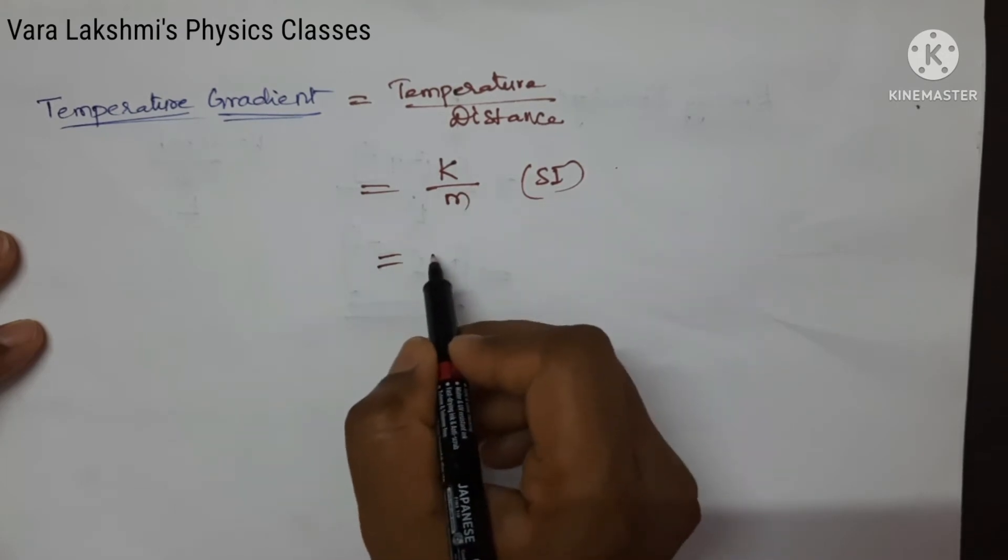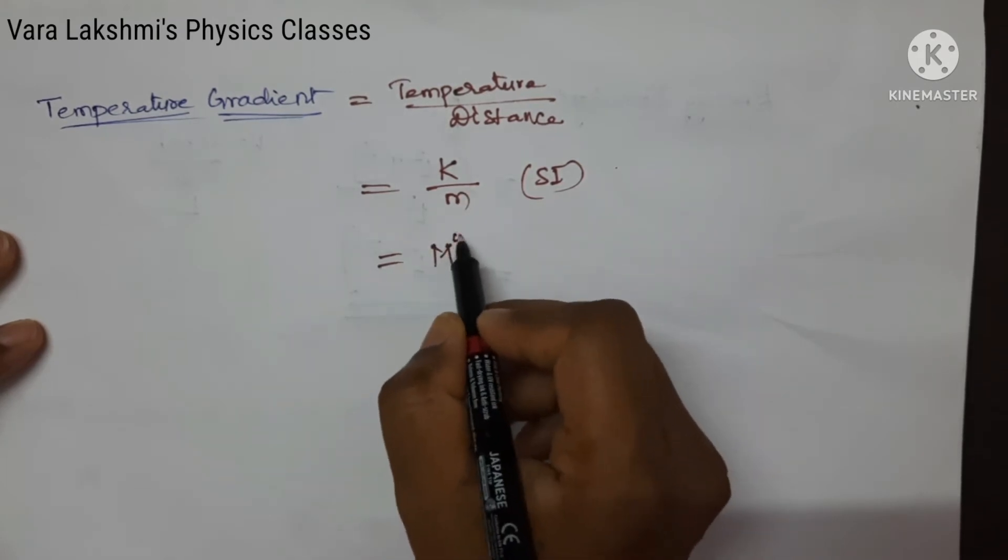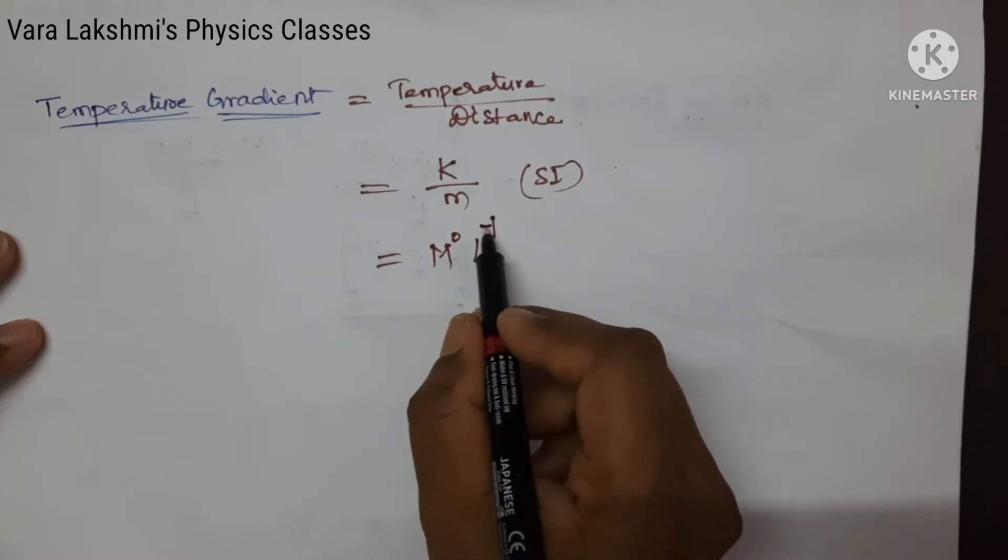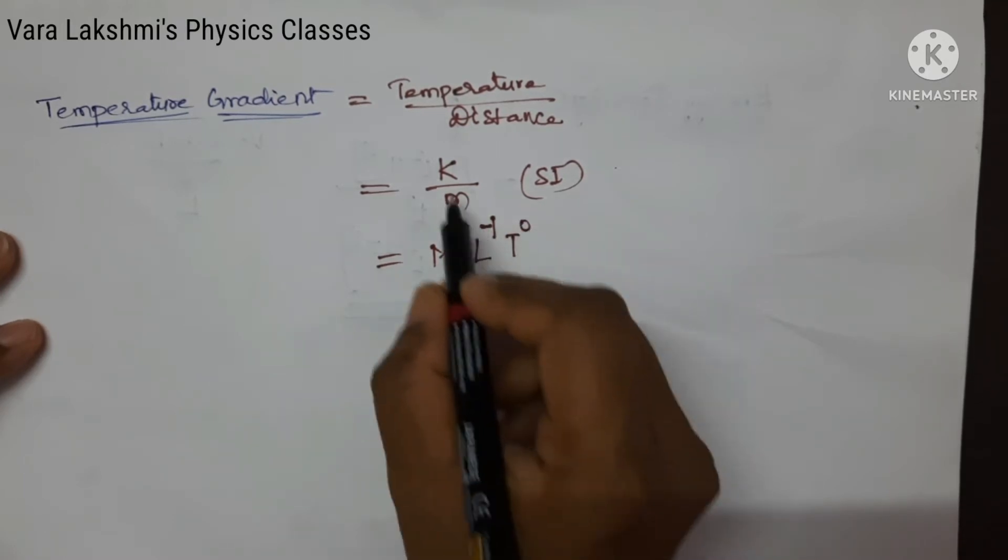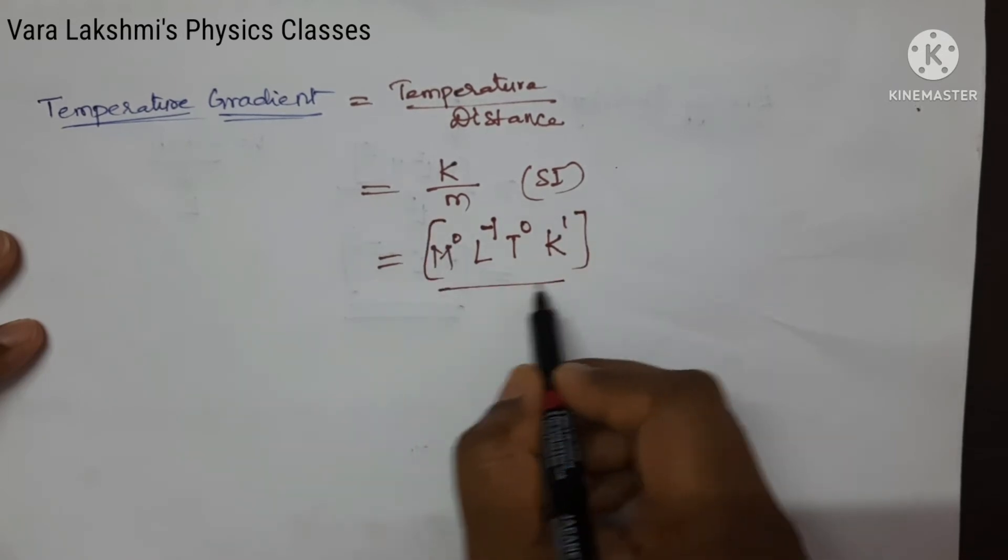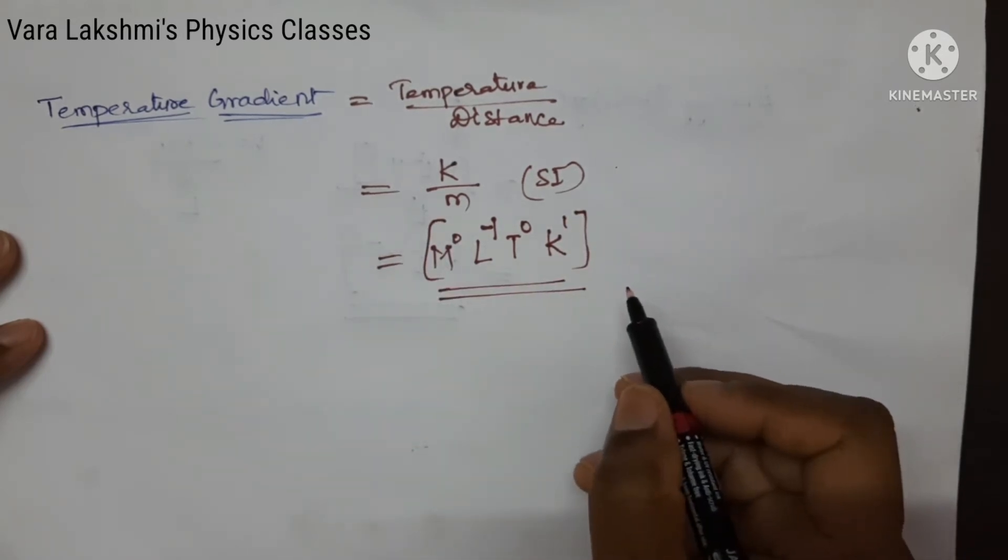Now write the dimension of formula. Here mass term is absent, so m power 0, and length is there, so l power minus 1, and time term absent, and Kelvin is there, so k power 1. This is the dimension of formula of temperature gradient.